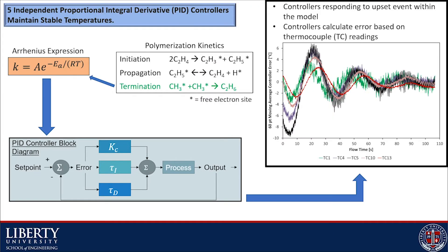The conditions within the reactor, even in CFD, are extremely variable. The complex flow patterns, turbulence, and chemical reactions taking place cannot be maintained if left alone. That is why our model has instituted a proportional integral derivative or PID controller. The five controllers act independently within the model to effectively maintain stable temperatures throughout all four zones. The most efficient way to control the model was to alter the pre-exponential constant in the Arrhenius equation for reaction rates of the termination step of the polymerization process.